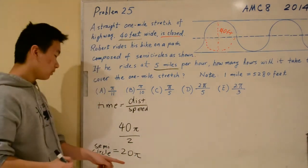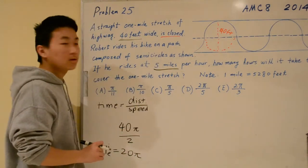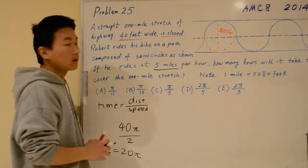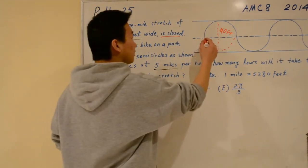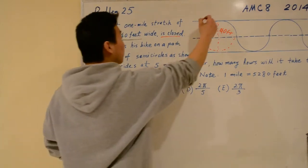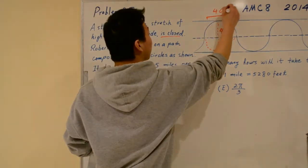Now that we know the length of the semicircle, we should find the number of semicircles in this path. Because the diameter is 40, this diameter is also 40, so this length right here is also 40 feet.